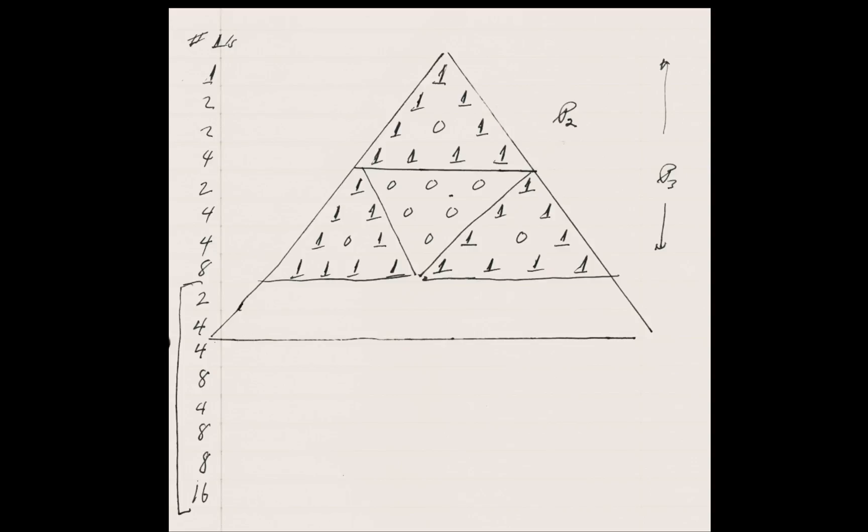So the first thing you can maybe try to prove based on this example is that if n is equal to 2^k for some k, then the nth row of Pascal's triangle will have all zeros except for the end ones.